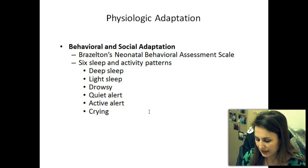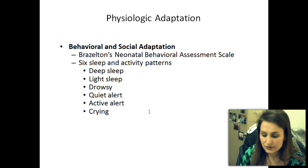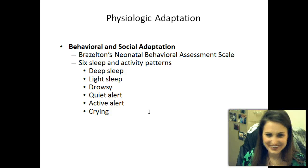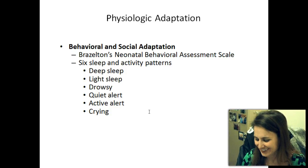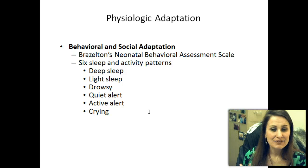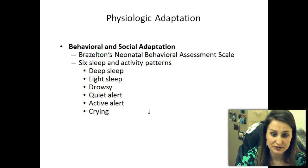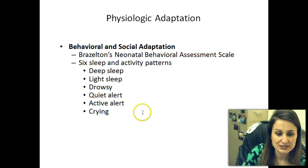Active alert — eyes are open, active body movements, and the newborn responds to stimuli with activity. And then, of course, you have crying — eyes might be tightly closed and thrashing movements are made in conjunction with active crying. If a baby is doing this, we need to realize that there's something wrong with that child. He or she is trying to signal that something is going on.